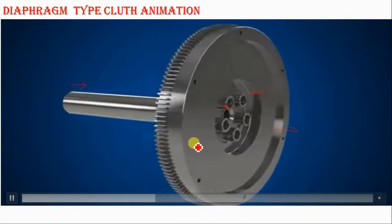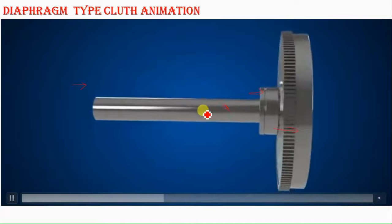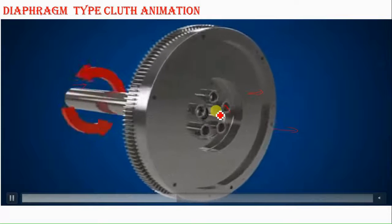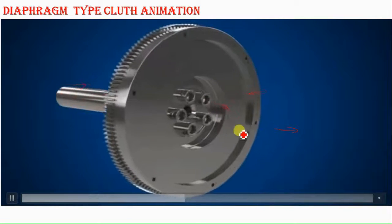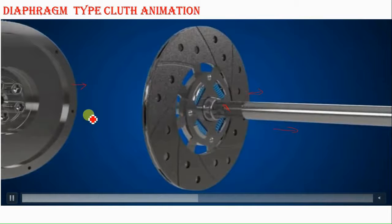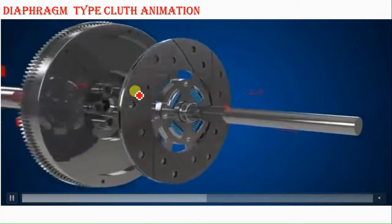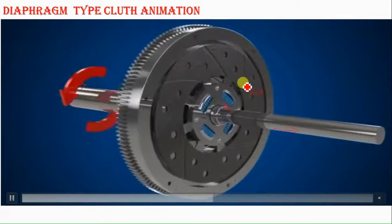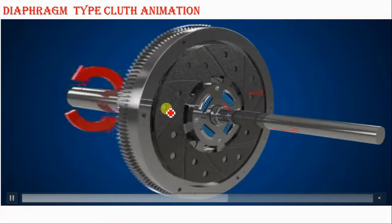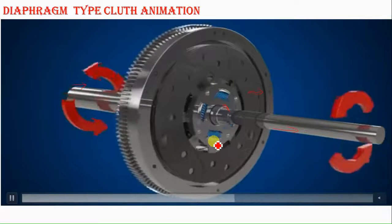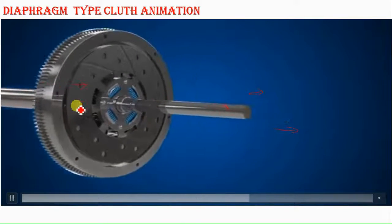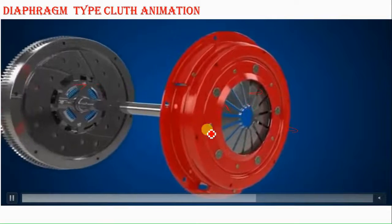The flywheel is basically connected with the engine crankshaft. When the engine provides power, the flywheel also rotates. There are bolt arrangements on which the diaphragm housing is mounted. There is an output shaft connected with the friction plates. The friction plate has friction lining over the annular sections of the plate. When both shafts are running, there is direct contact between the flywheel and the friction plate.